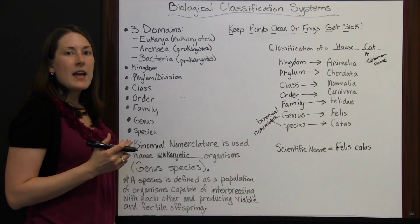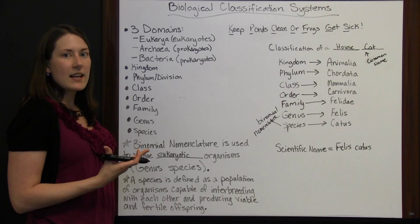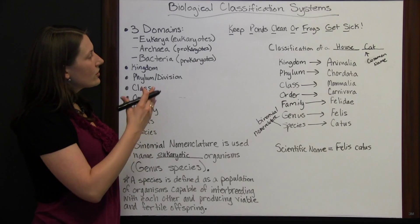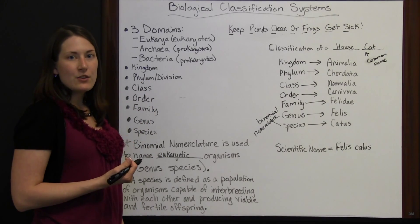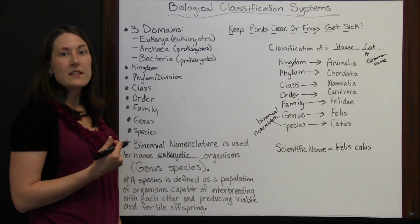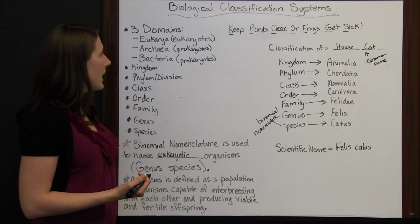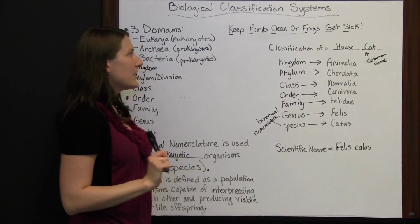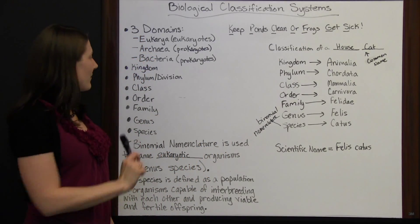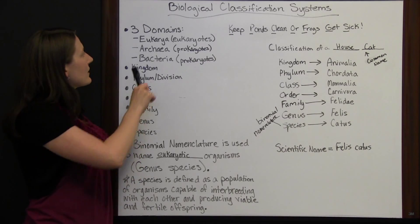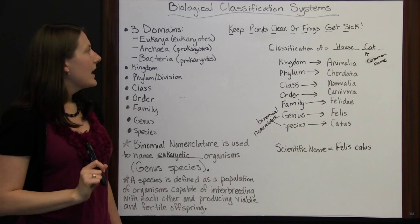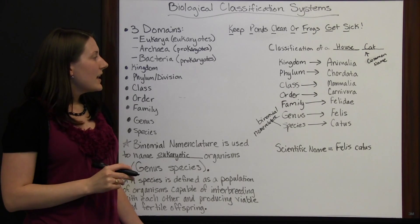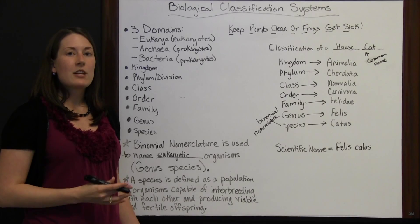This classification system is used by all scientists so that everyone is on the same page when classifying a new organism or determining whether something already discovered fits into existing rankings. To remember the order, use the acronym 'Keep ponds clean or frogs get sick.' Remember our three domains: Eukarya, Archaea, and Bacteria. The most important thing to remember is that the biological classification system is there to classify organisms and keep everything organized.